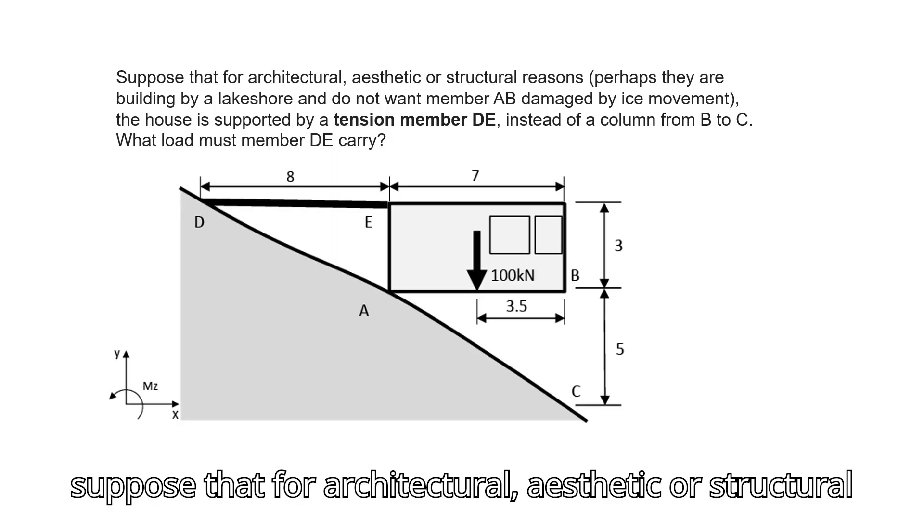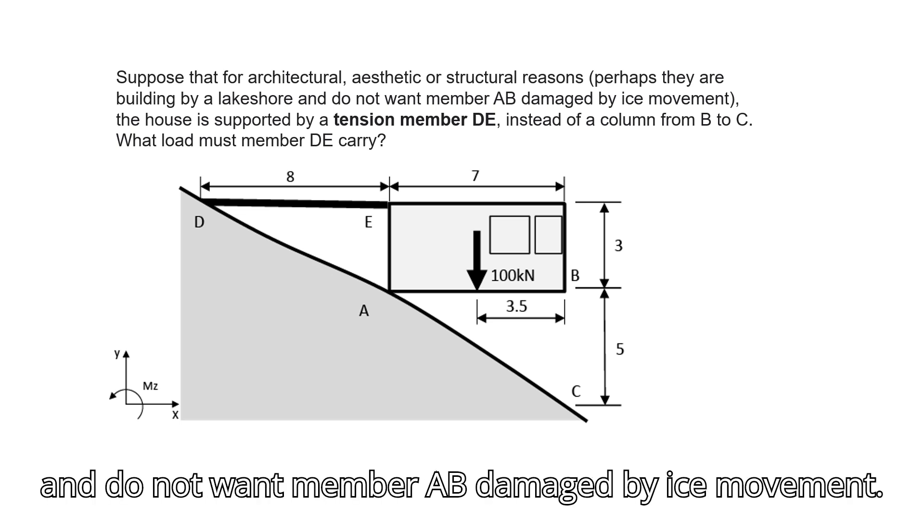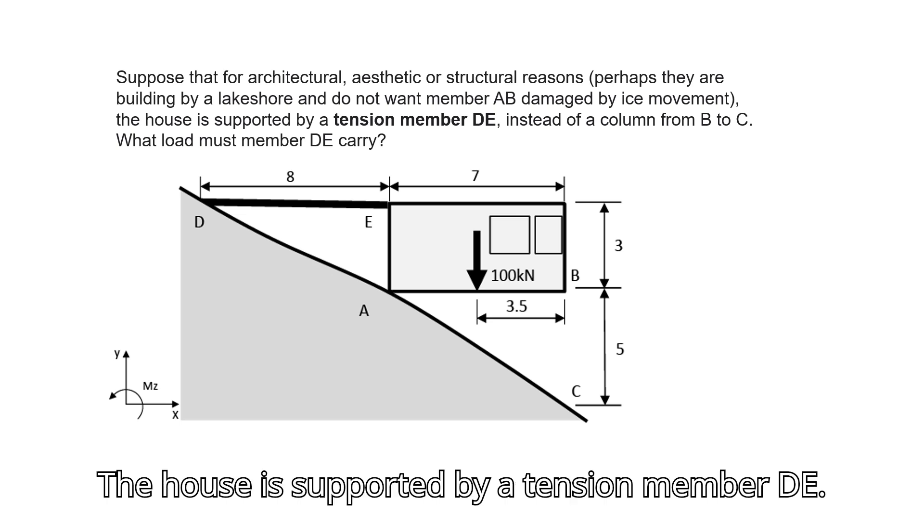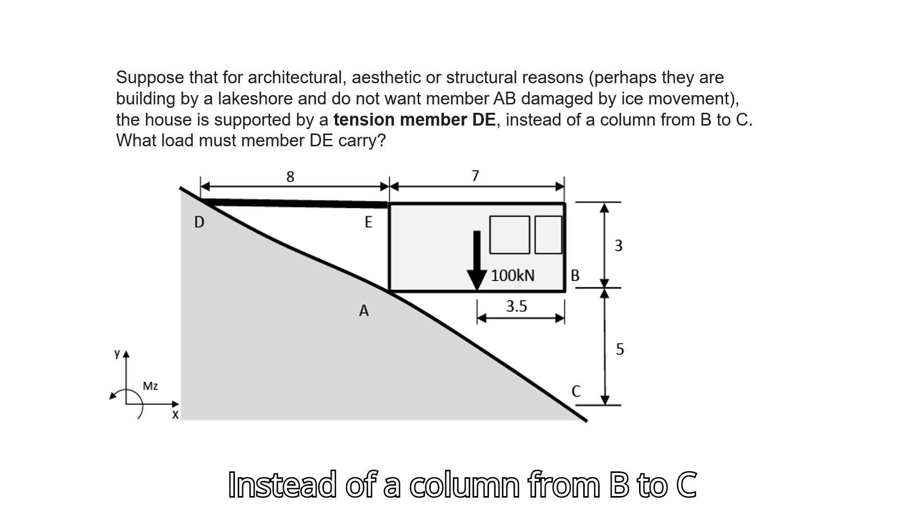Suppose that for architectural, aesthetic, or structural reasons, perhaps they are building by a lakeshore and do not want member AB damaged by ice movement. The house is supported by a tension member DE instead of a column from B to C. What load must member DE carry?